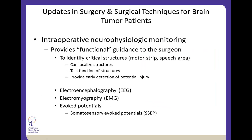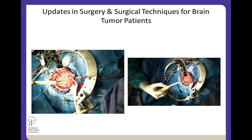Another commonly employed tool is intraoperative neurophysiologic monitoring, which provides functional guidance to the surgeon — another way to identify critical structures such as the motor strip. We can test these functions and provide early detection prior to causing permanent injury. EEG, EMG, and various evoked potentials are used, where you stimulate and observe a response. Here is a picture of an awake craniotomy patient — head fixed to the table, with an array looking for potential discharges, and a stimulator mapping the motor strip around a benign tumor, allowing us to plan our trajectory to avoid critical structures.